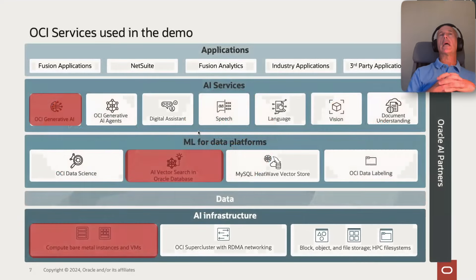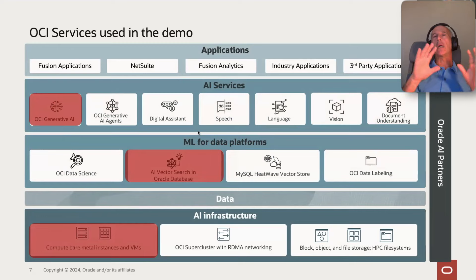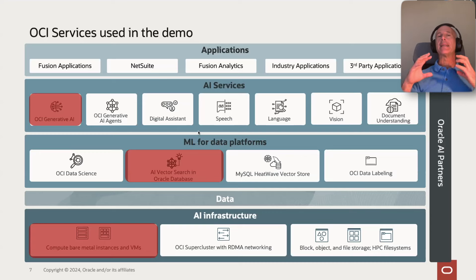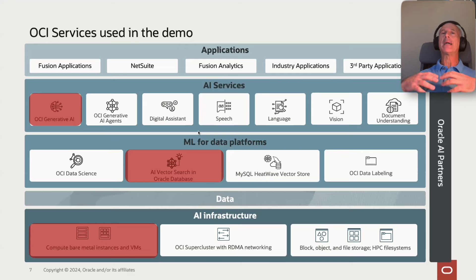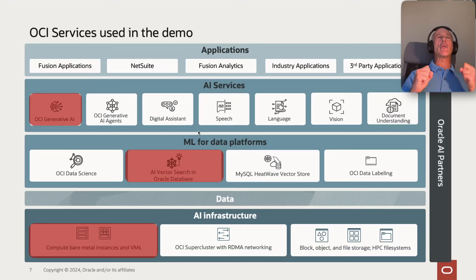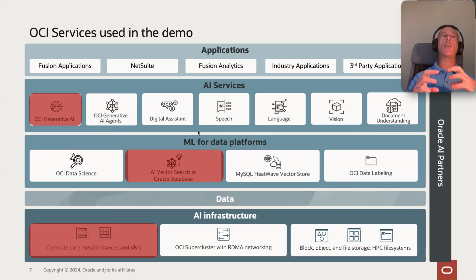We are using cloud services. This slide shows how complete Oracle Cloud's AI offering is. We are using services in three big areas. To manage the content and documentation, we are using a vector store based on Oracle AI Vector Search — new technology added to Oracle Database. There is also support for other vector stores, for example OpenSearch on OCI. For indexing and generation of content, we are using models as a service as part of our OCI Generative AI offering.